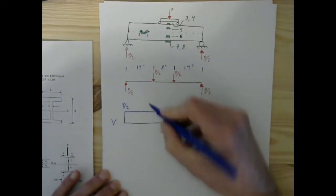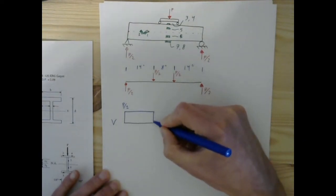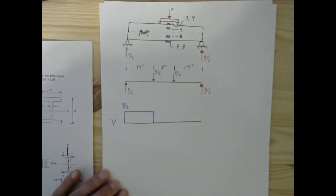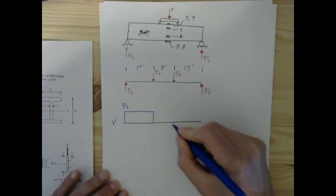After 14 inches, we're going to drop down P over 2. That's going to conveniently bring us to zero. We're going to remain at zero because there's no distributed load from this point all the way over to this point for 8 inches.